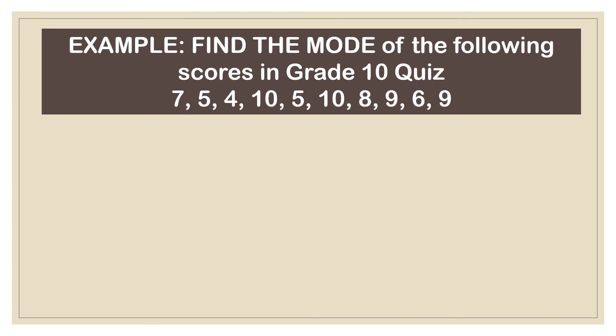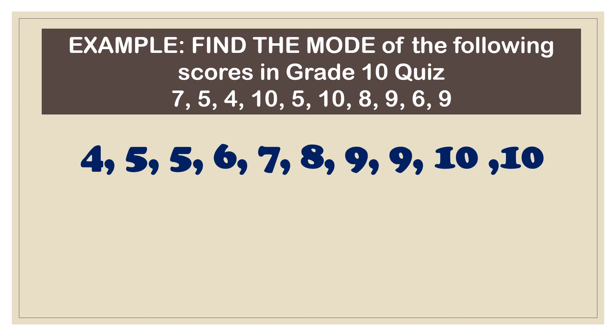Example number 2, find the mode of the following scores in grade 10 quiz. It would be better if you arrange the numbers from highest to lowest so you know right away if there are repetitions or how many times they repeat. So what's our mode here? Our mode is three. So, 5 appears twice, 9 also appears twice, and 10 appears twice as well. So our mode here, there are 3 modes. Sometimes we call this trimodal.